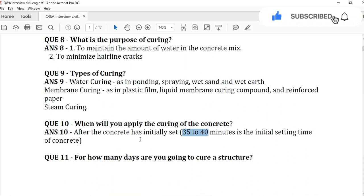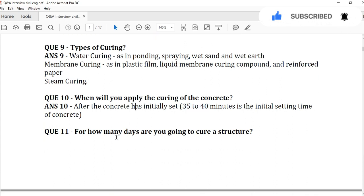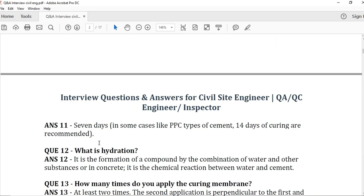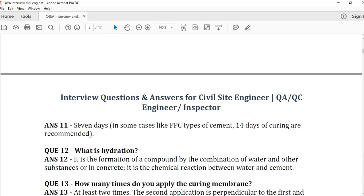Question number 11: For how many days are you going to cure a structure? Seven days. Generally, we cure the structure for 7 days. In some cases, like PPC types of cement, 14 days of curing are recommended. For PPC types of cement, you have to do the curing for 14 days. And generally, you have to cure the structure for 7 days.